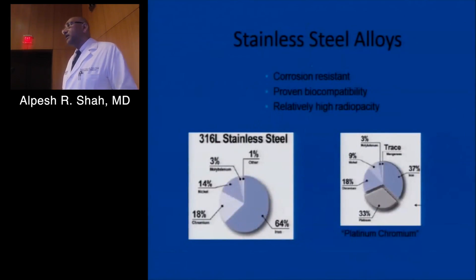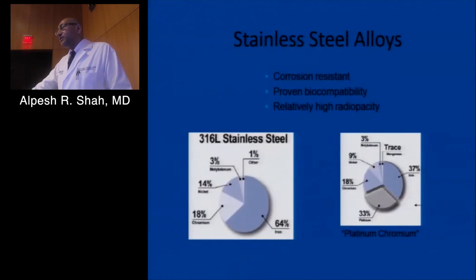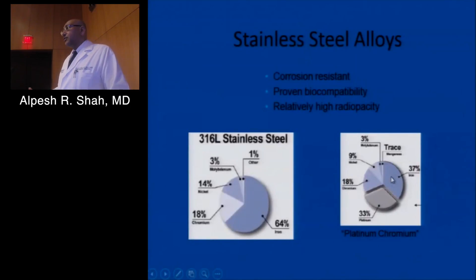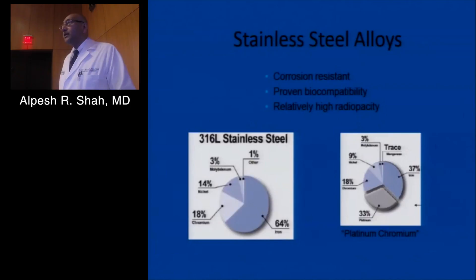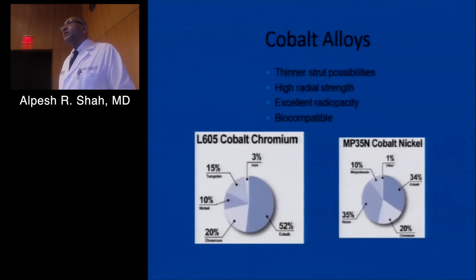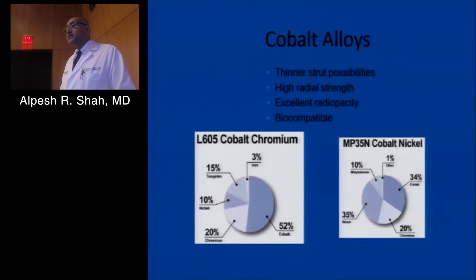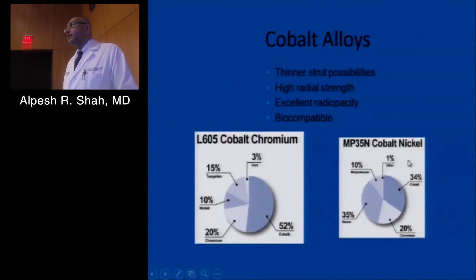We started with choosing an alloy. Stainless steel is one of the most inert alloys, very biocompatible and highly radiopaque. Beyond stainless steel, platinum chromium offers better deliverability and expansion due to the additional platinum content. One of the biggest advances was cobalt alloys, which allow us to make really thin struts without losing radial strength, and are also very biocompatible and visible. Currently two cobalt alloys are approved and used: cobalt chromium and cobalt nickel.